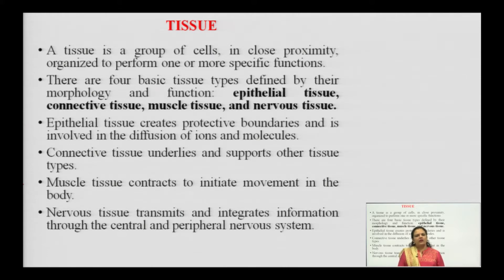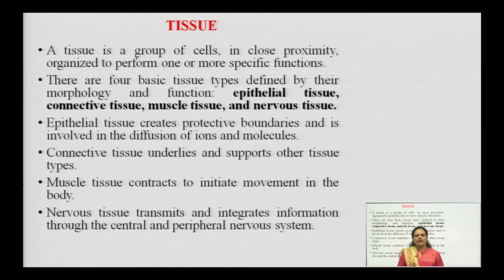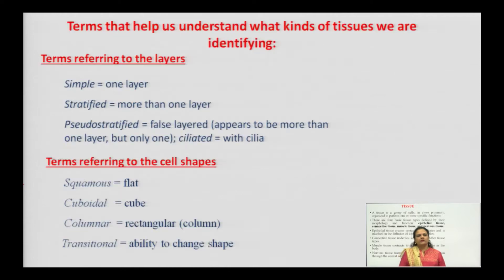Muscular tissue helps to contract and initiate movement of different body parts. For organ linkage and smooth systematic functioning, we need muscular tissue. The nervous tissue is involved in transmission and integration of information — to receive signals or impulses and pass these impulses towards the central nervous system or the peripheral nervous system (PNS).